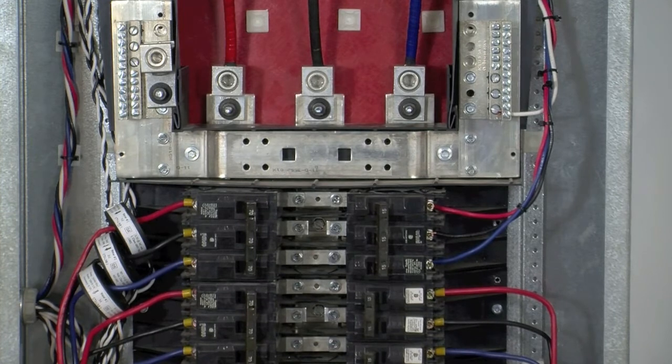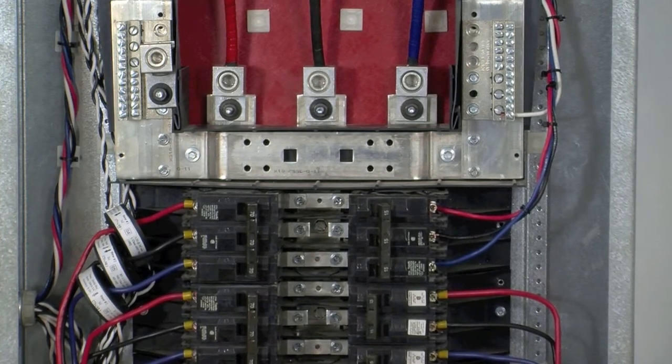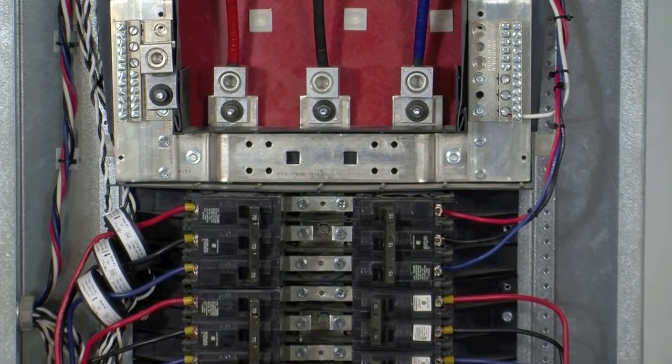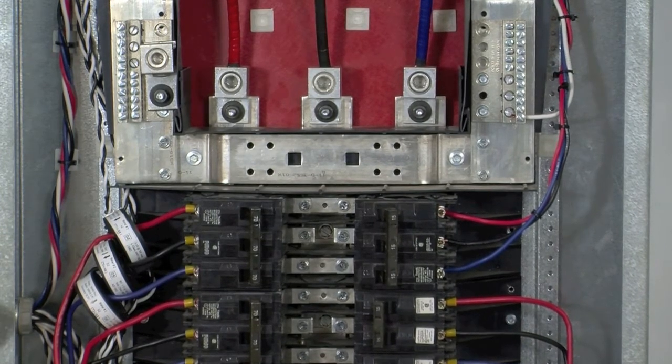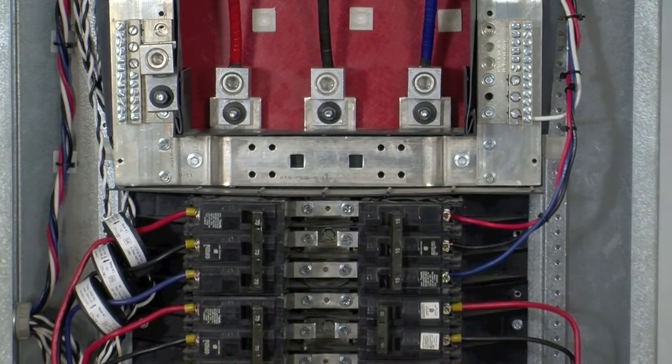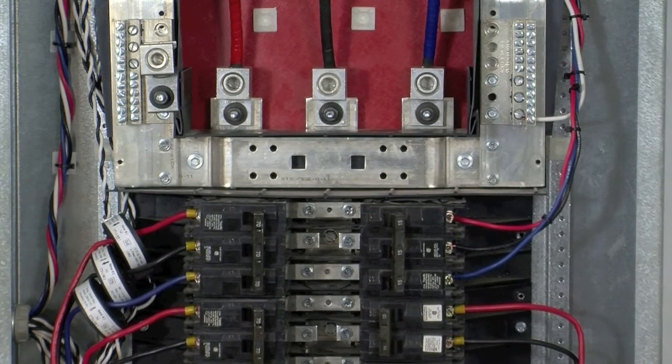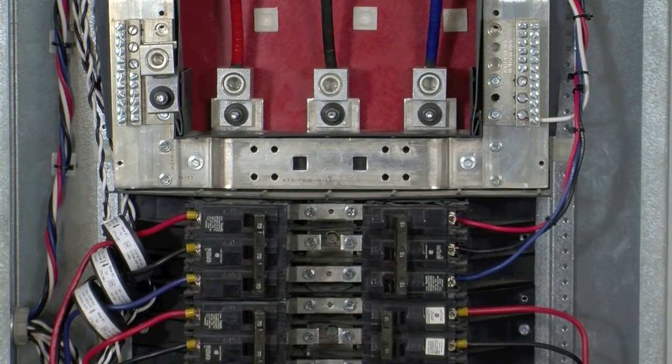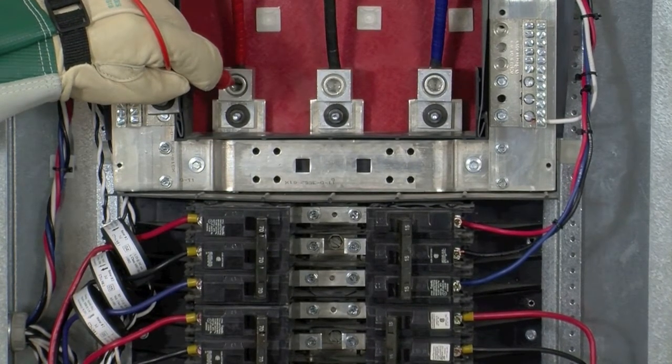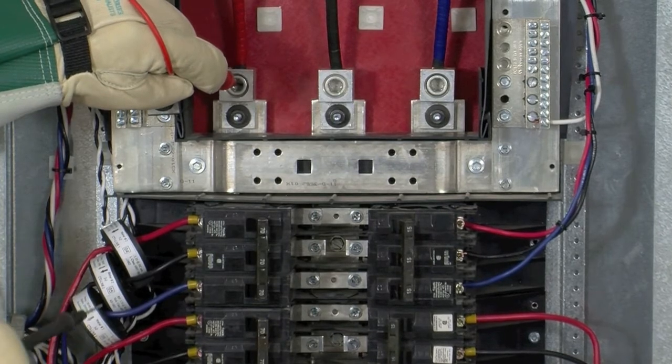Because we are installing CTs on a breaker load, a phase test is required to ensure that each CT is being installed on its correct phase. So, in order to perform this test, we need to energize the panel and temporarily turn the breaker to its on position. We're going to take a multimeter and set it to check for alternating voltage. We're then going to take one of our probes and place it on phase A or line 1 main feed. Take our other probe and place it on what we believe to be phase A on the breaker.